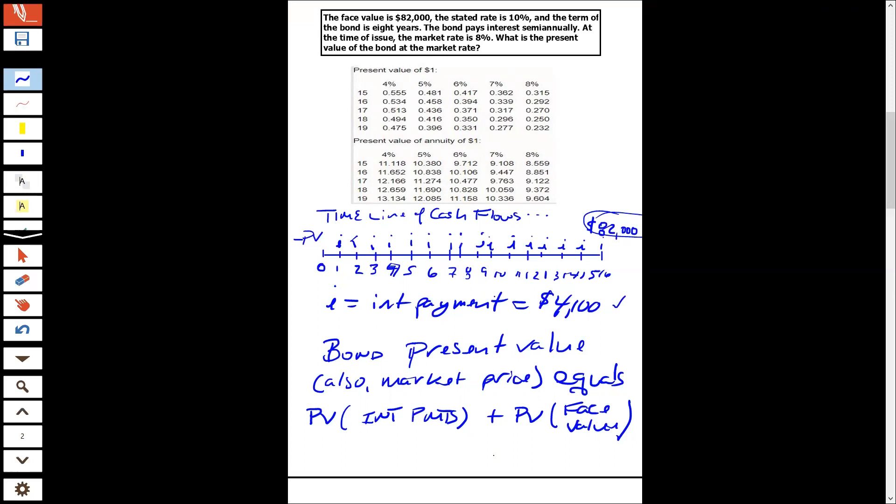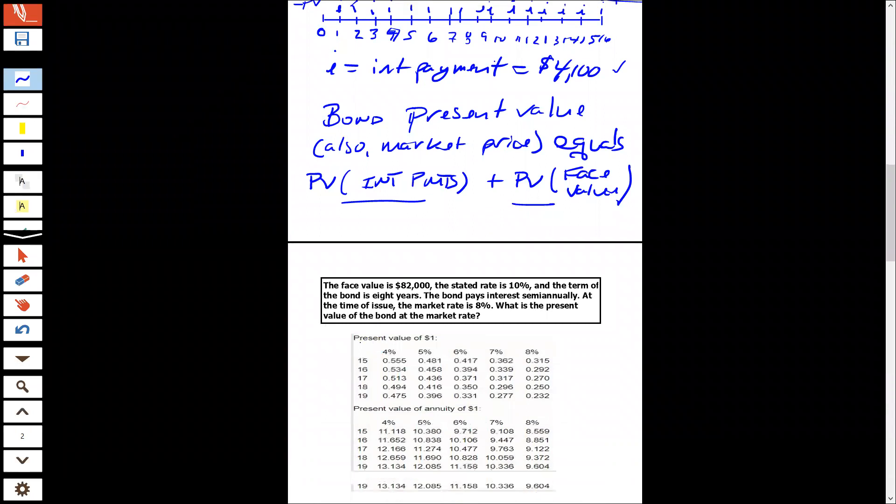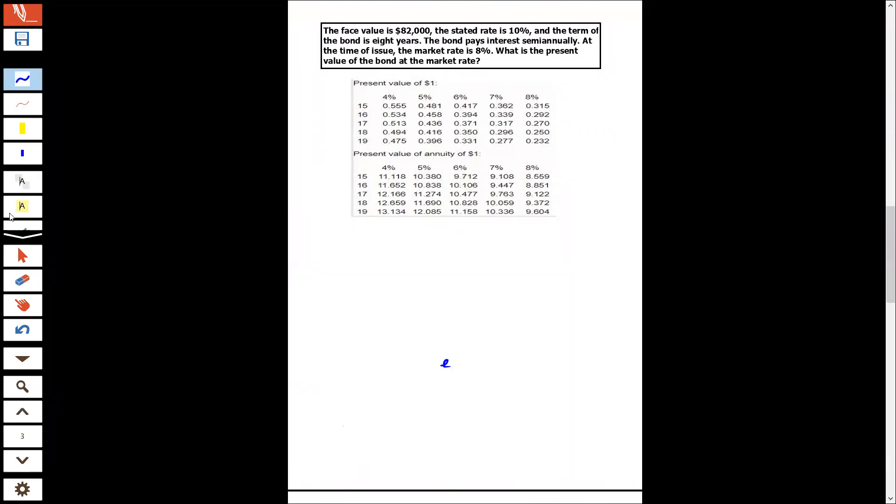So this conceptually, this bond present value is going to be the present value of the interest payments plus the present value of the face value. All right, so present value of the interest payments plus the present value of the face value. So we want the present value of an annuity, and I'm going to put ORD for ordinary.